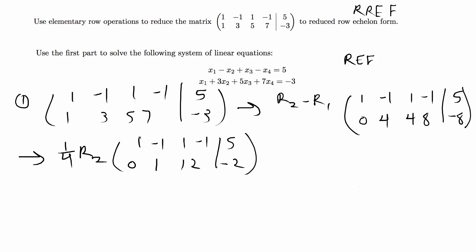Now we have leading ones on both rows and now we just have to get rid of the -1. I'm going to do that by adding row 1 and row 2 to get 1, 0, 2, 1 equals 3 and 0, 1, 1, 2 equals -2.